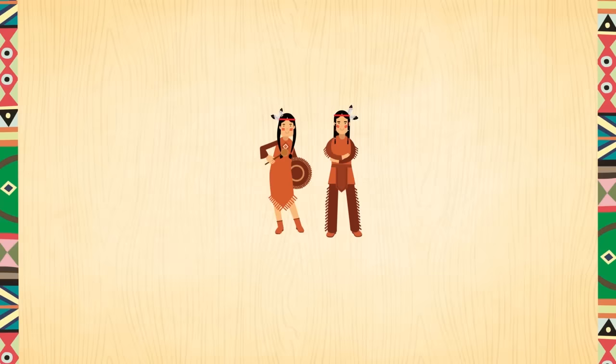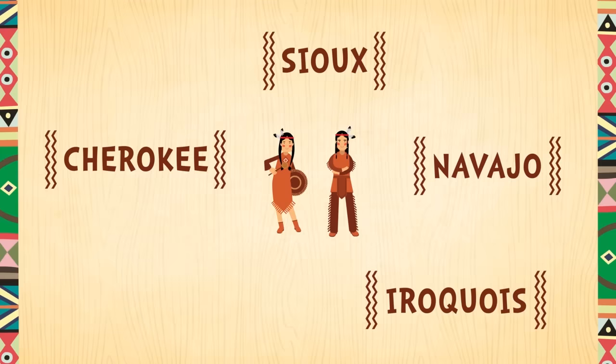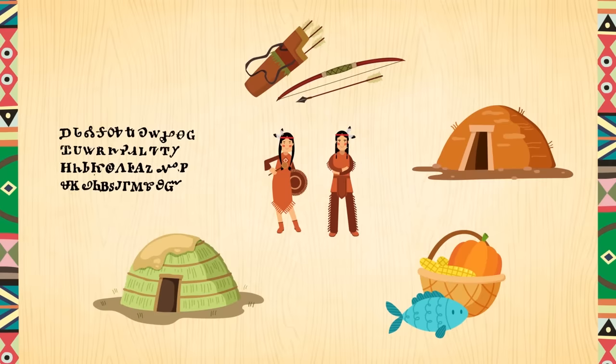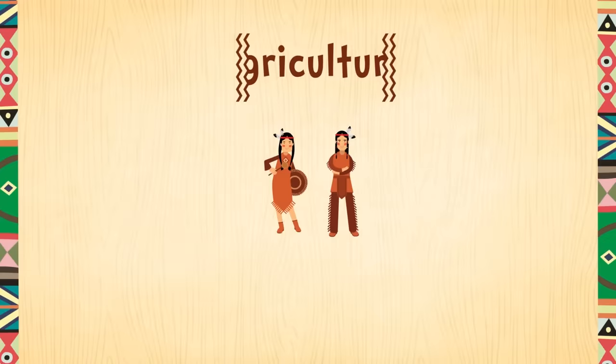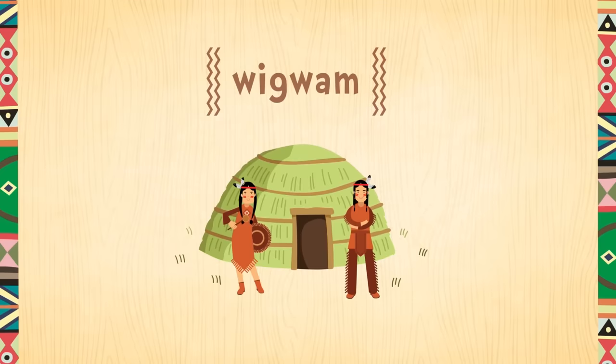Let's review. Native Americans are the original people who lived in the United States. The five largest tribes and nations are Cherokee, Sioux, Navajo, Iroquois, and Apache. Each tribe has its own unique culture and traditions. They were known for unique skills such as hunting, fishing, and agriculture. A wigwam is a Native American shelter built from branches, leaves, and grass.